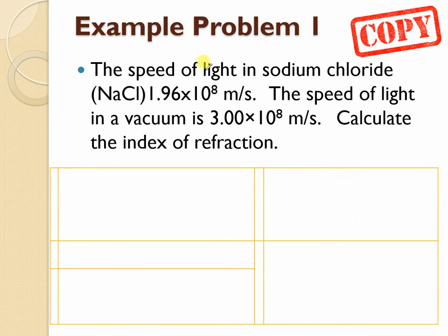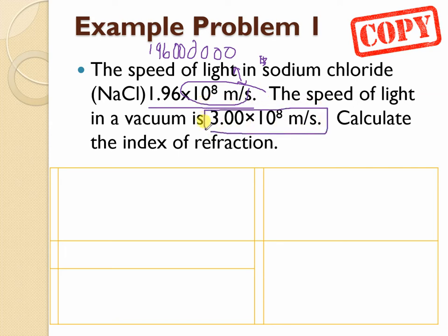Here's a typical question we are going to do. The speed of light in sodium chloride is 1.96 times 10 to the 8. Now if you wanted to write that number out, it would be 196 followed by 6 zeros. Either of these ways will work. If you're using this on a calculator, you have to use perhaps the EE button or the EXP button to represent the times 10 to the 8. The speed of light in a vacuum is, this is a known, 3.0 times 10 to the 8 meters per second. We will never calculate this value. It is a known given quantity.